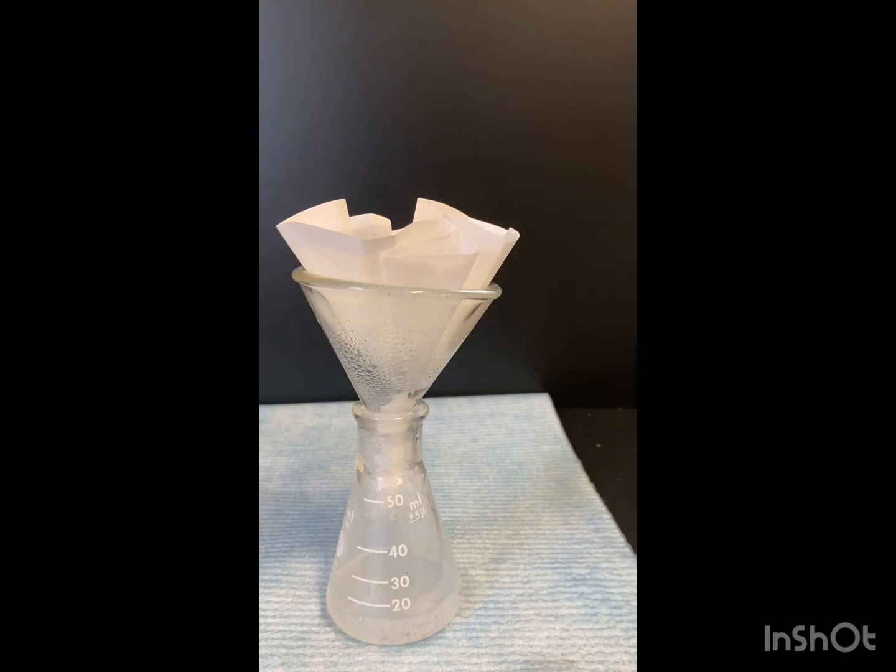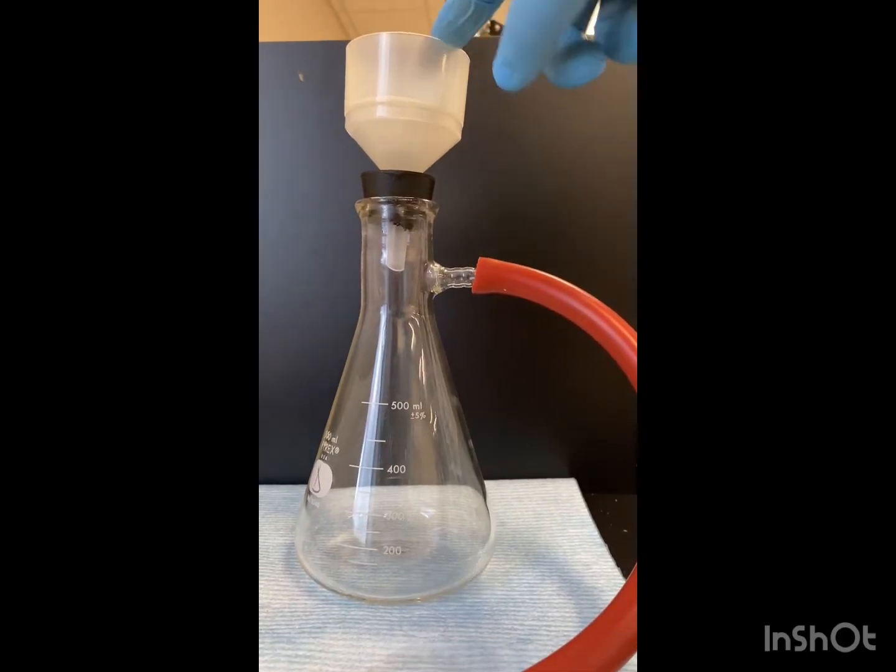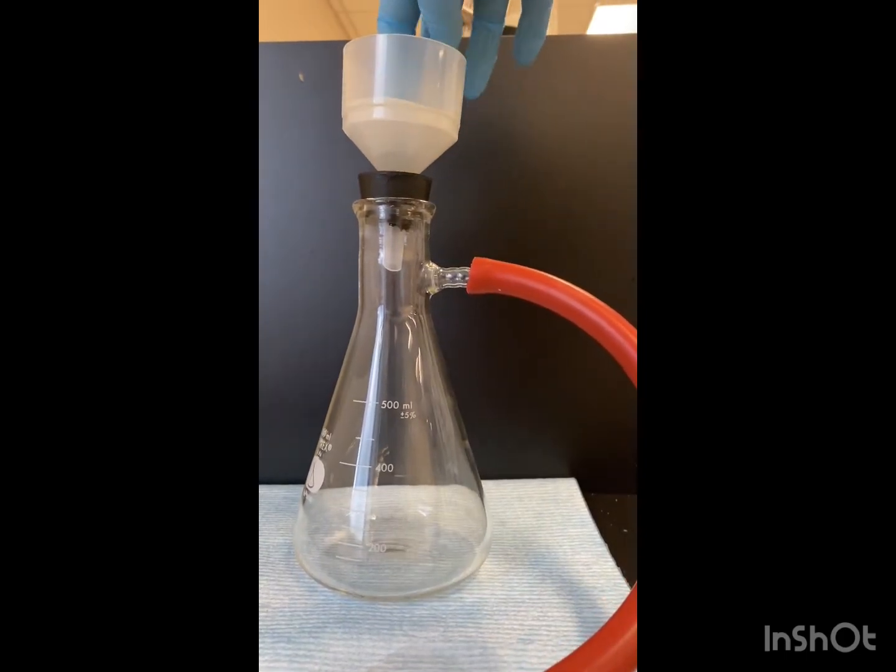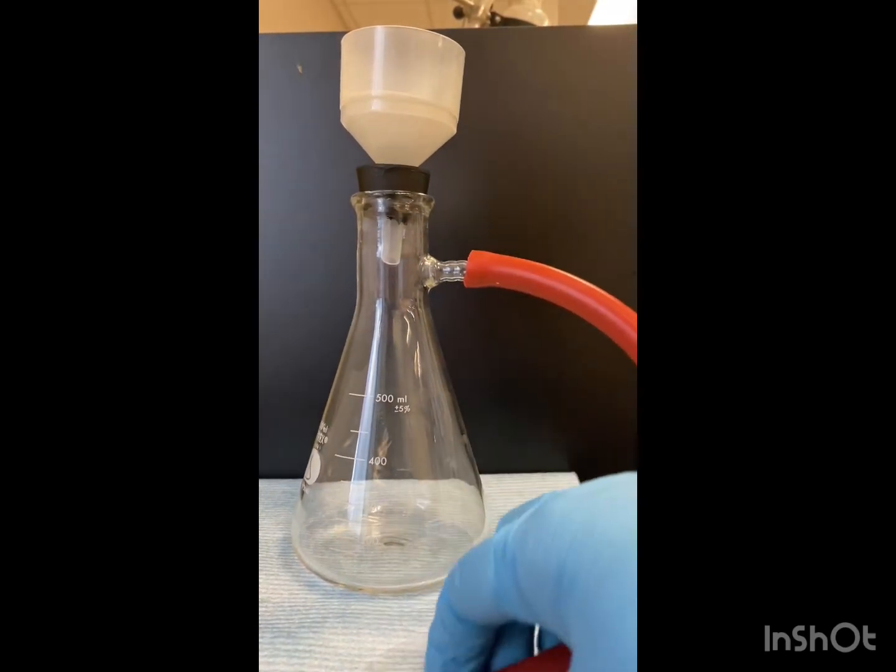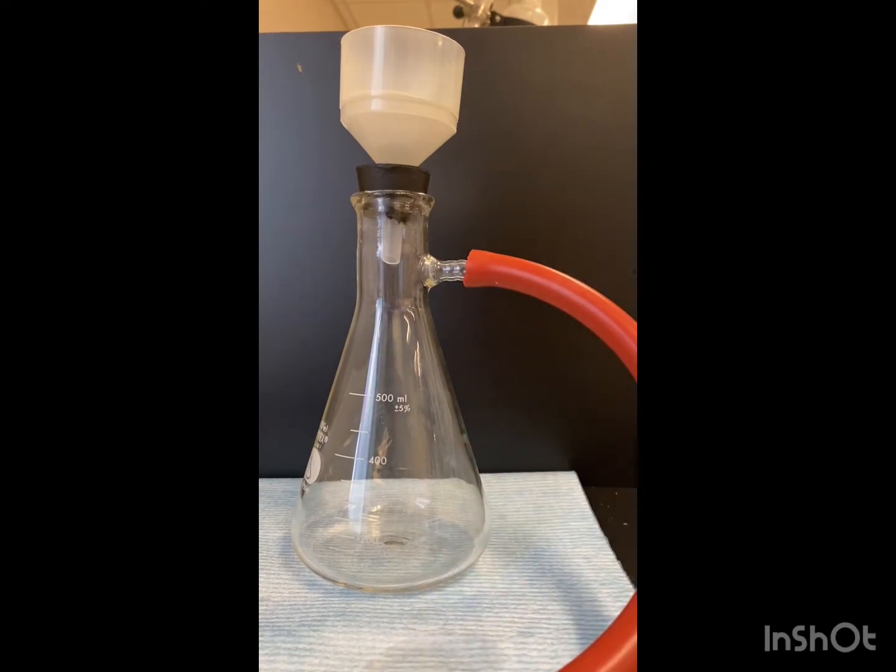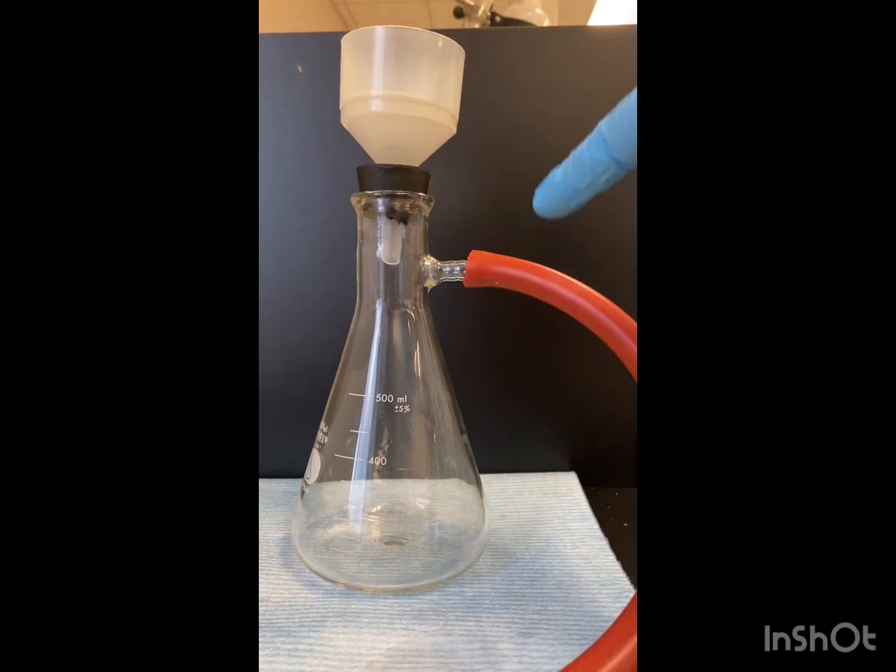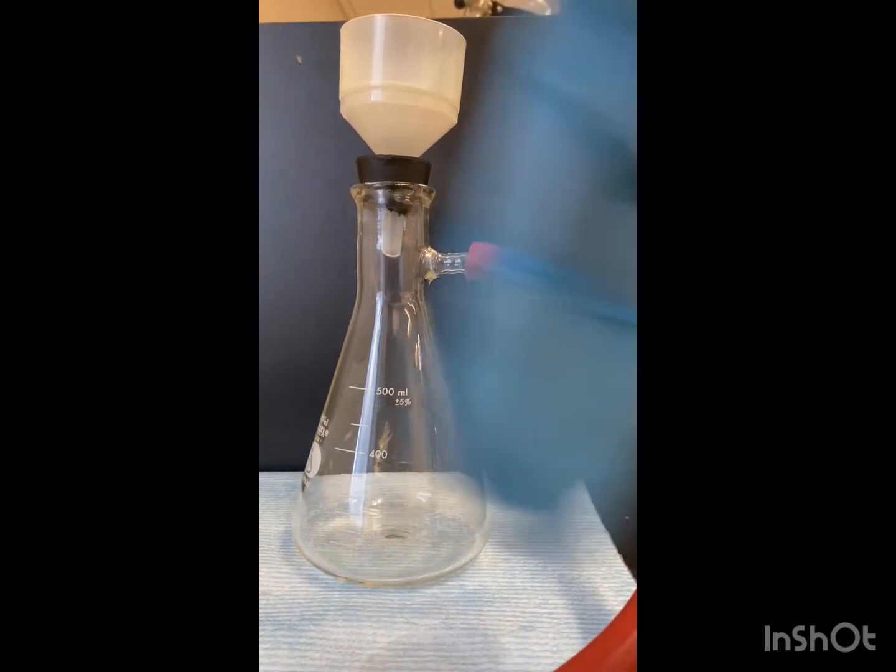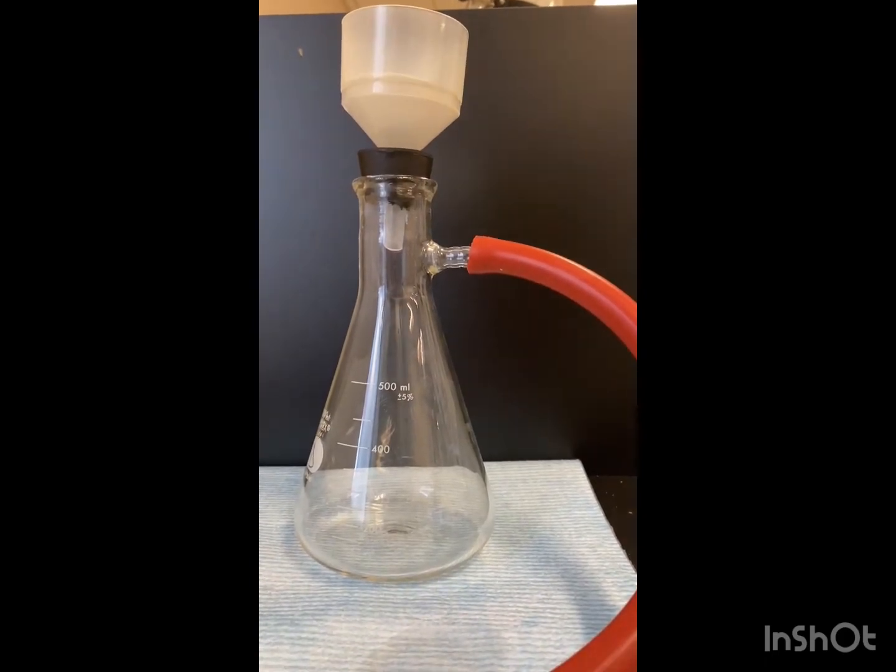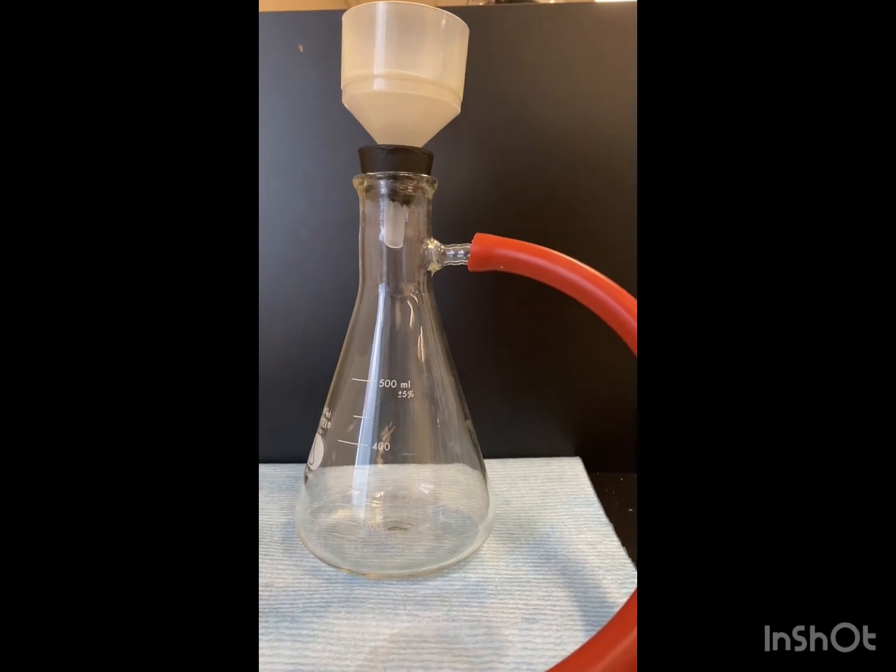Another thing we can do while we're waiting for this is to set up our vacuum filtration setup. So this is our vacuum filtration setup. You're going to have a Buchner funnel with filter paper inside, this adapter, a filter flask, and your red vacuum hose to hook up to the vacuum. You can also put this on a ring stand and clamp it, but this is for video purposes. In your fume hood, you can clamp it.